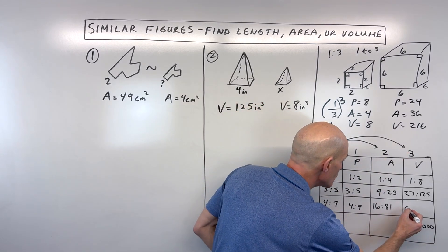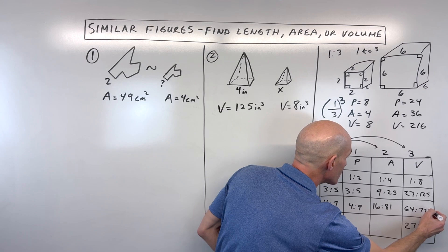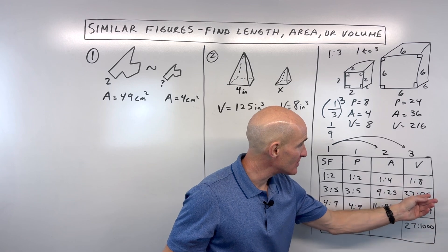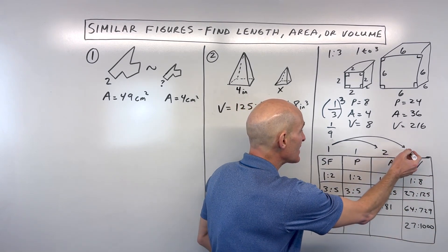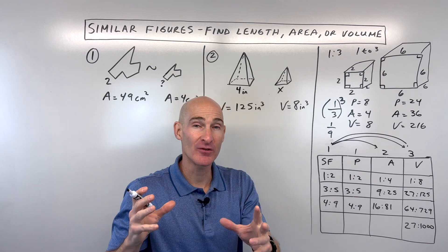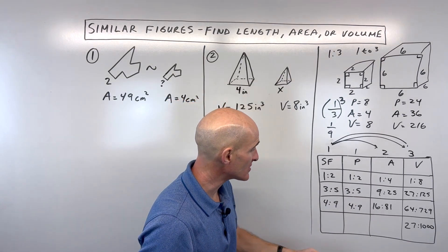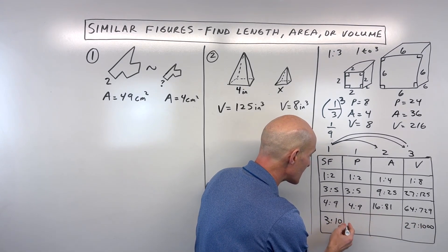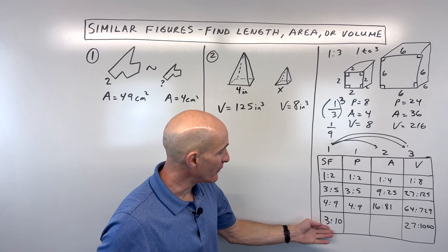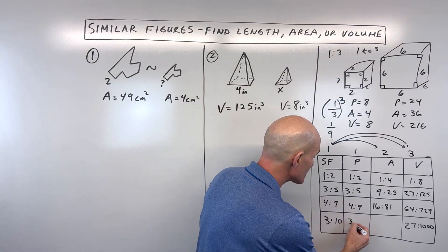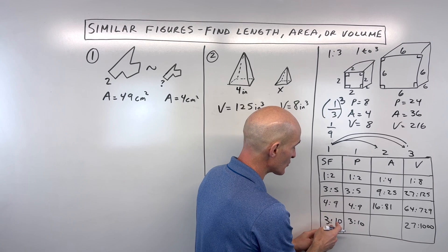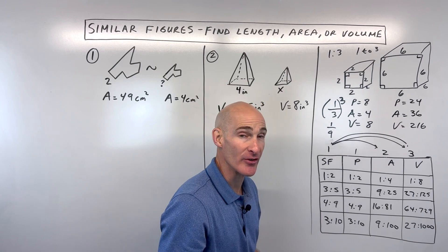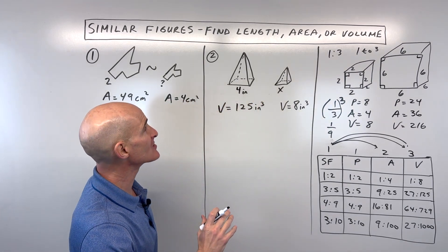From the scale factor 4 to 9, cube to get the volume ratio: 4³=64, 9³=729. If given the volume ratio — say 27 to 1000 — take the cube root for the scale factor: ∛27=3, ∛1000=10. The perimeter ratio is also 3 to 10, and squaring gives the area ratio: 3²=9, 10²=100.